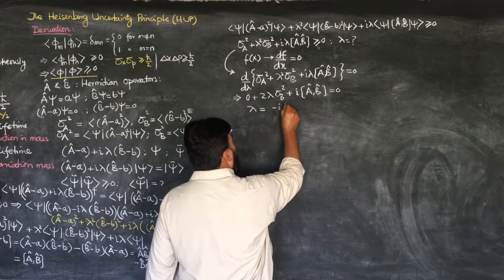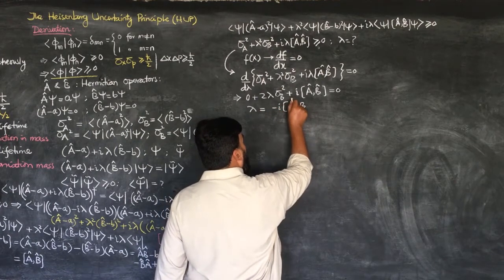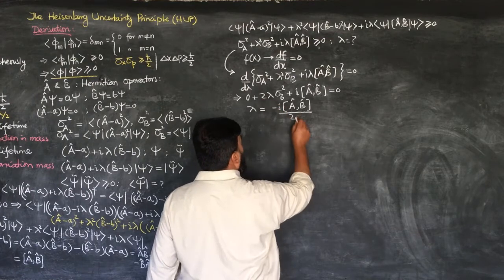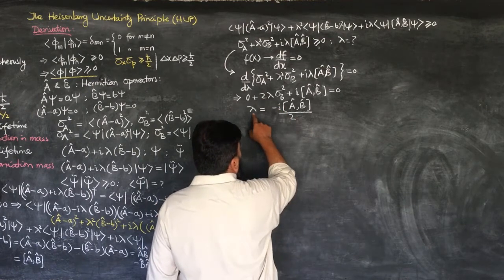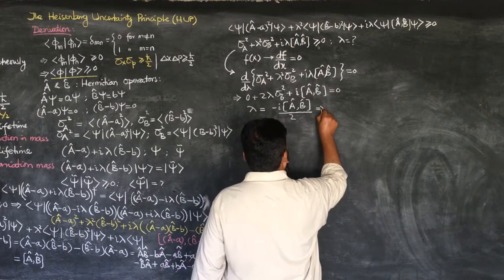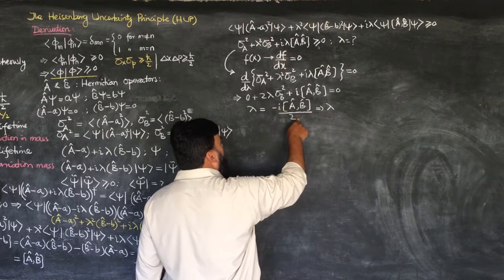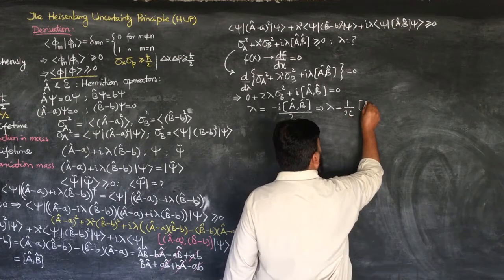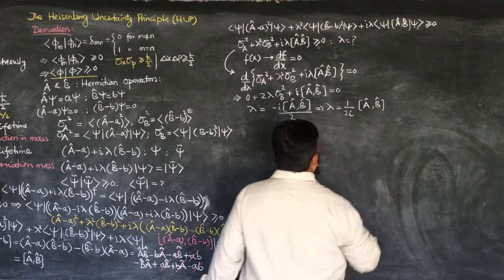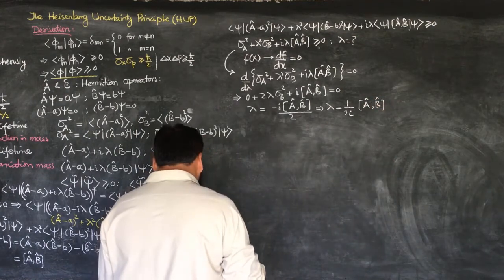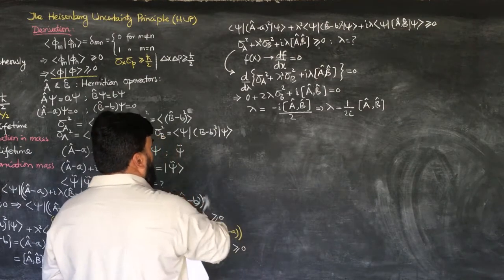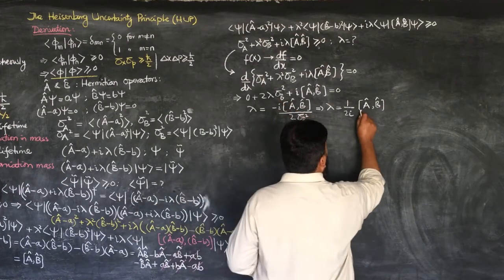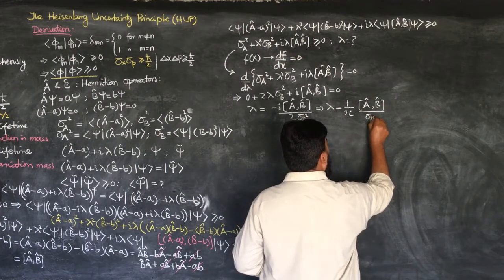From 2λσ_B² + i[A,B] = 0, solving for λ: the [A,B] term moves to the other side and the 2σ_B² comes to the denominator. Moving the i to the denominator gives λ = -[A,B] / (2i·σ_B²). I forgot to include σ_B² earlier — so this is [A,B] over σ_B².